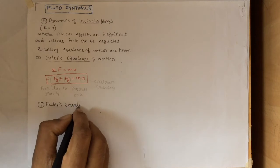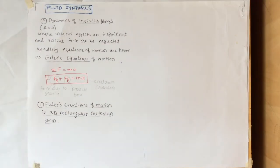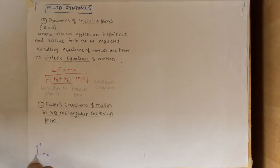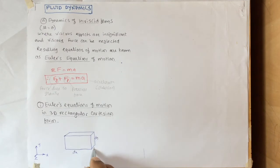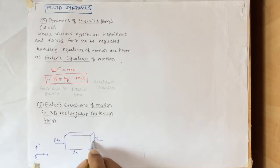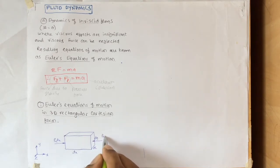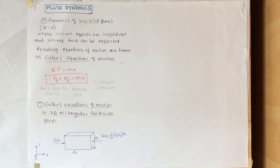We'll derive first the Euler's equation of motion in 3D Cartesian coordinate form. Let's define coordinate axes x, y, and z and have an element with length dx in the x-direction, dy in the y-direction, and dz in the z-direction. Let's assume pressure is acting in the x-direction as Px·Ax, because it is a force — if Px is the pressure, then Px·Ax is the force. Px·Ax is the force on the left side of the element, directed towards the right in the x-direction.